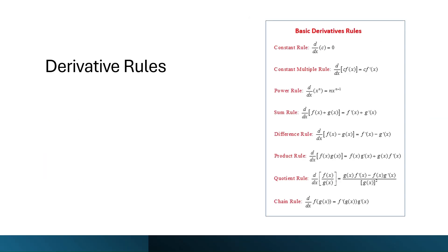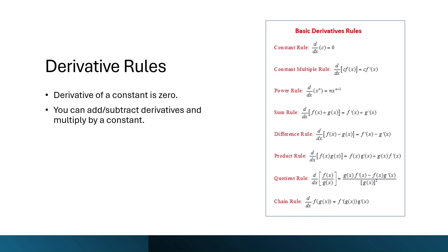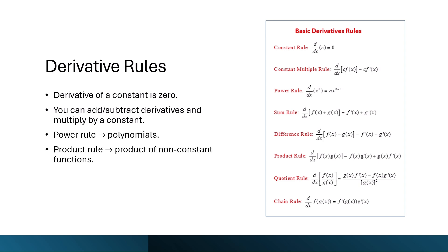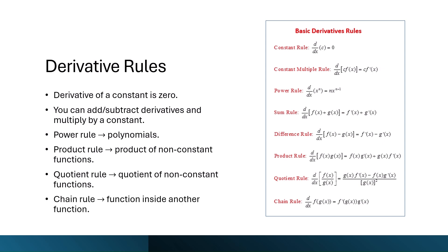Basic rules make taking derivatives easier. The derivative of a constant is zero. You can add or subtract derivatives and multiply by a constant. The power rule applies to polynomials. The product rule applies to the product of non-constant functions. The quotient rule applies to the quotient of non-constant functions. And the chain rule applies to functions inside of another function.